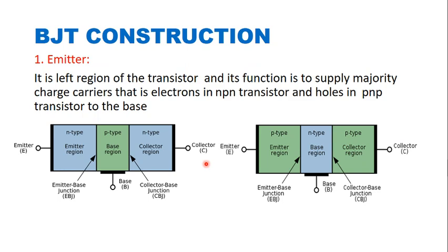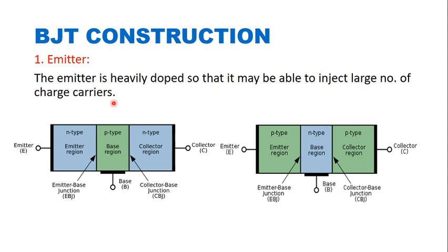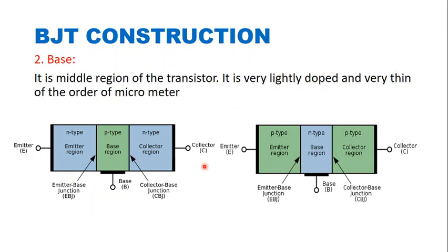The first region is the emitter region. As shown in the diagram, it is the left region of the transistor. Its function is to supply majority charge carriers to the base region. Electrons are the majority charge carriers in the case of an NPN transistor, and holes are the majority charge carriers in the case of a PNP transistor. The emitter region is forward biased with respect to the base to supply majority charge carriers. It is heavily doped so that it can inject a large number of majority charge carriers into the base region.